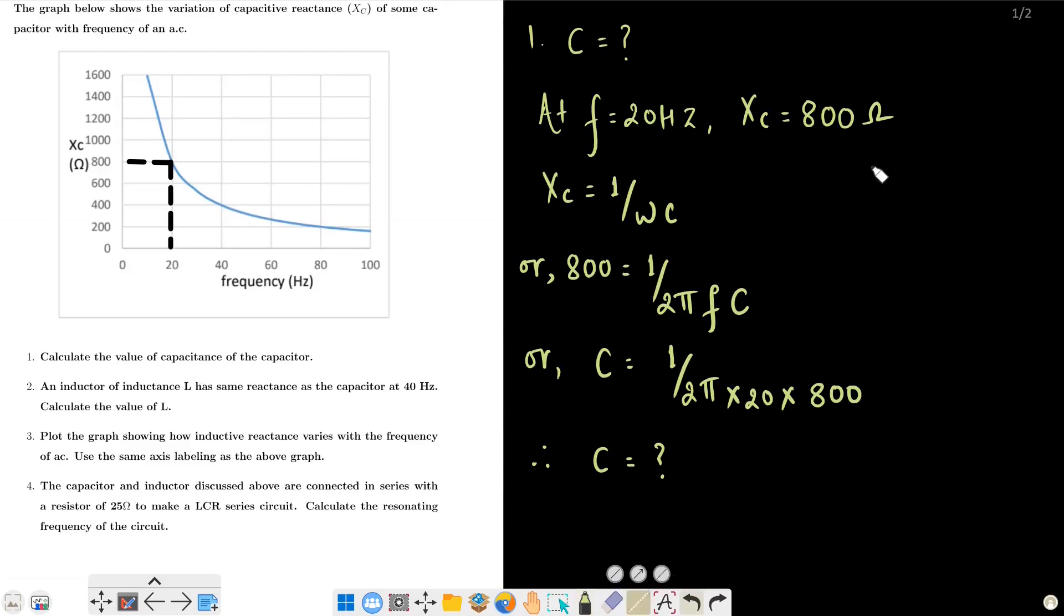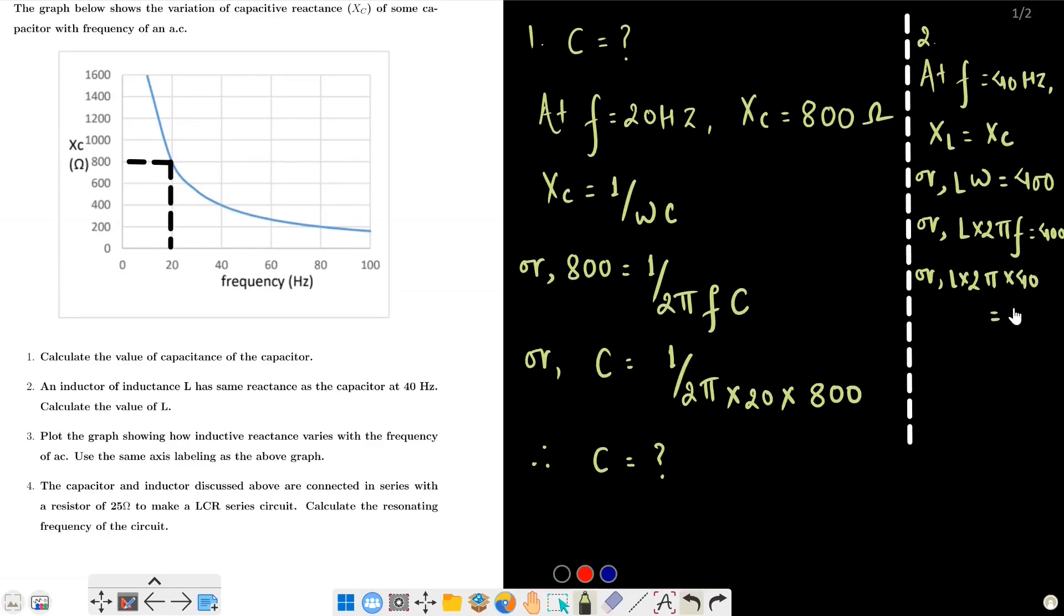Number two asks: an inductor of inductance L has same reactance as the capacitor at 40 Hertz. At F equals 40 Hertz, inductive reactance equals capacitive reactance. X_L equals omega L. At 40 Hz corresponding X_C is 400 ohms, so 400 equals L into 2 pi F. L into 2 pi into 40 equals 400.